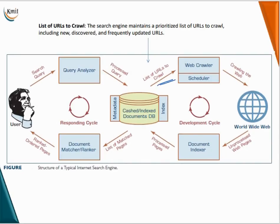Next, the list of URLs to crawl. The search engine maintains a prioritized list of URLs to crawl, including newly discovered and frequently updated URLs.